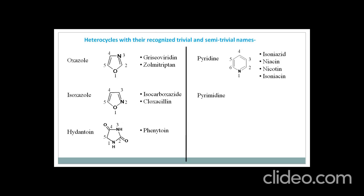The next one is pyrimidine. The ending '-ine' indicates a 6-membered ring. 'Pyr' indicates the ring has nitrogen, and 'mi' — as seen in imidazole — indicates one more nitrogen at the 3rd position. Here is the ring and the numbering, and you will clearly observe that the nitrogens are at the 1,3 positions relative to each other. Examples of drugs are trimethoprim, purine, and pyrimethamine. Trimethoprim is an example of an antibiotic.